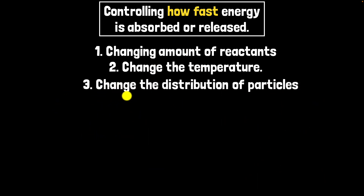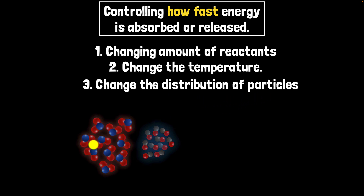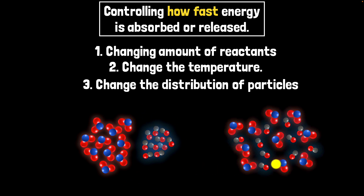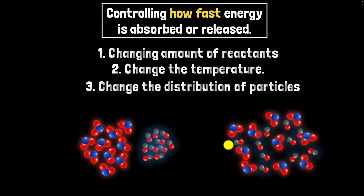The third method is changing the distribution of particles. If reactants are concentrated in one area, collisions can only happen there and the collision rate is lower. But if particles are more uniformly distributed, there are more chances for collisions and a higher collision rate. We can achieve this by stirring the reaction mixture, or by crushing solid reactants so more particles are exposed to the other reactants. This only increases the rate, not the total amount of energy transfer.